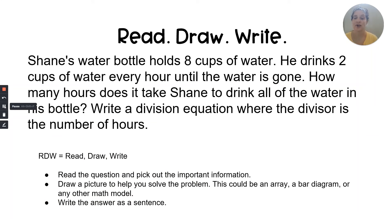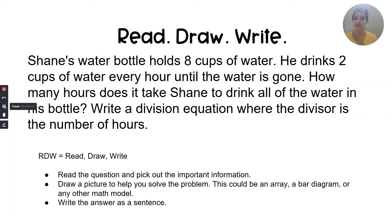We're ready for our Read, Draw, Write question. The first one we do together. The Read, Draw, Write process is sometimes called the RDW. R stands for read the question and pick out the important information. D stands for draw a picture to model how you've solved the equation. And W stands for write the answer as a sentence — a good, juicy answer that includes words from the question and tells how you arrived at your solution.